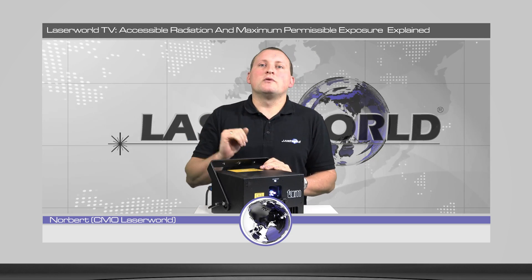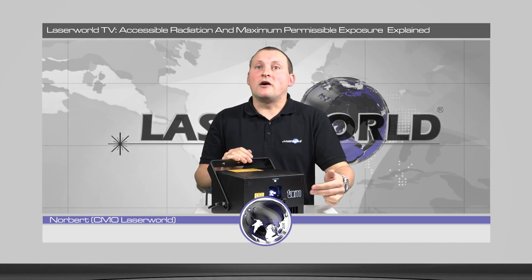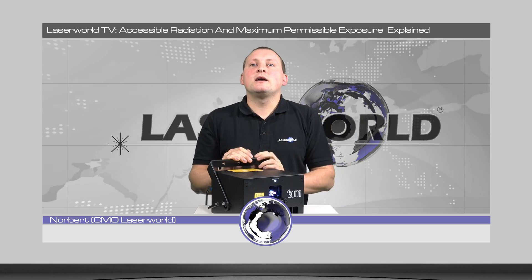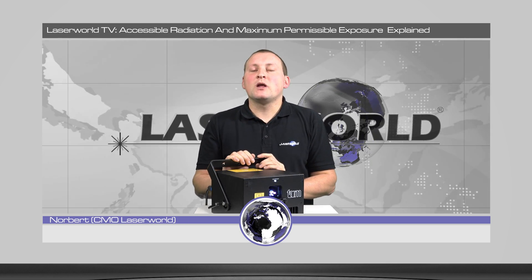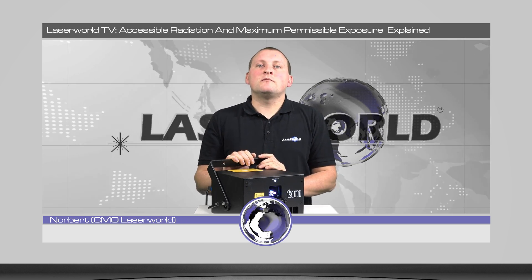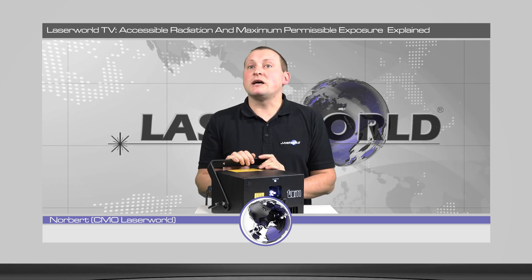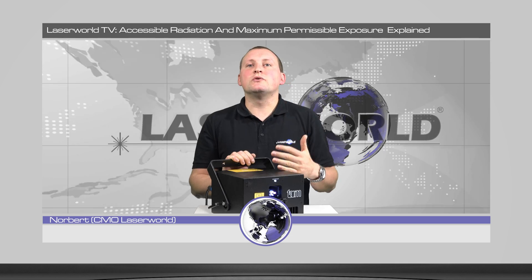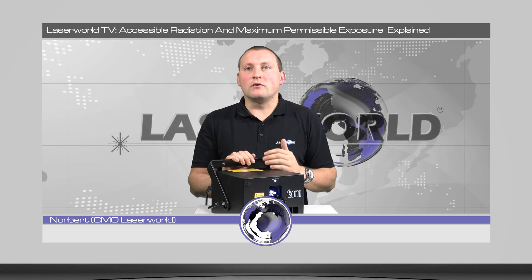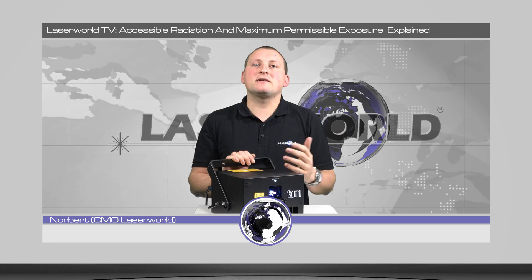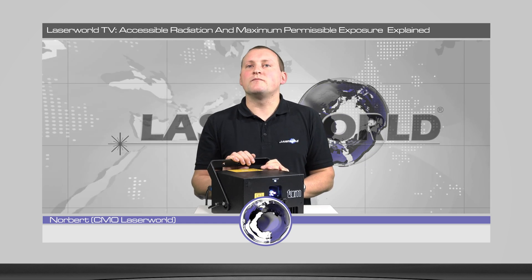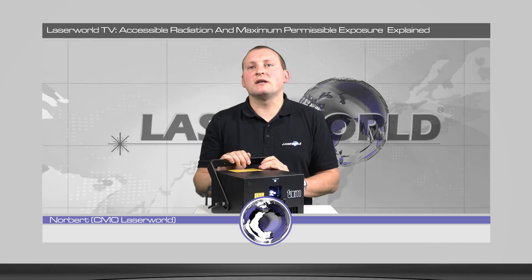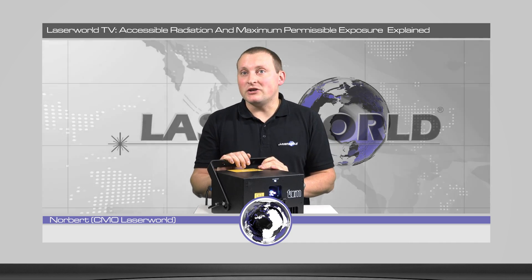It's always important to understand what's the AR — the accessible radiation here at the unit — and the MPE power we have over there in the audience. Usually the MPE must not exceed laser class 2. So if you want to audience scan, you must ensure that the laser beams and laser effects in the audience area do not exceed laser class 2, which is not a big problem because any software on the market supports safety zones or beam attenuation.